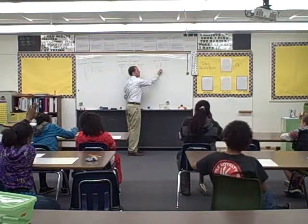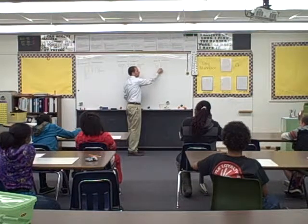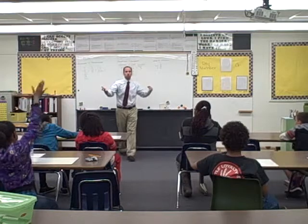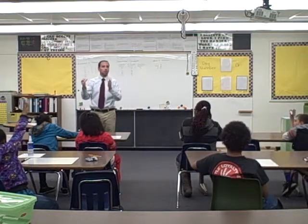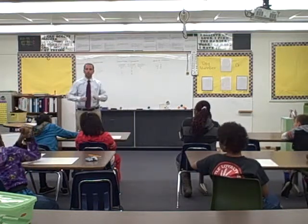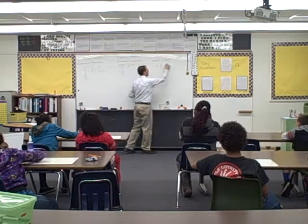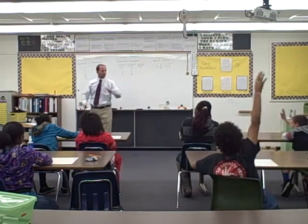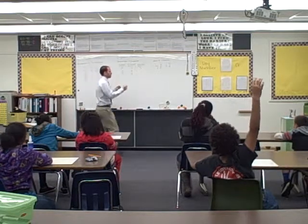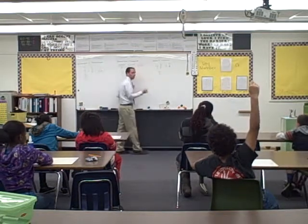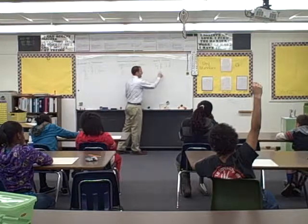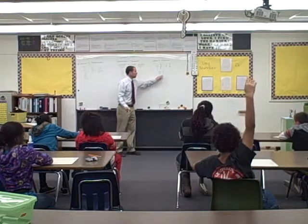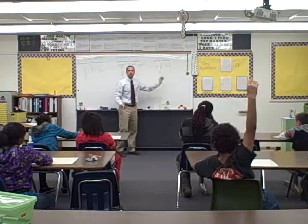We have a whole number. And what is three over five called? A fraction. We have a whole number and a fraction. Kiana, give me one. Six and four-ninths. Nick? Eight and four-sevenths. We have a whole number with a proper fraction next to it — that is a mixed number.